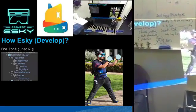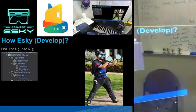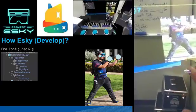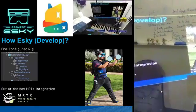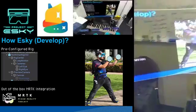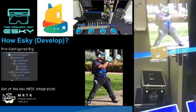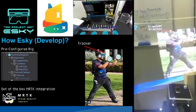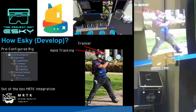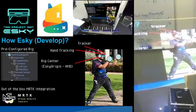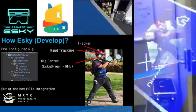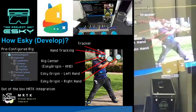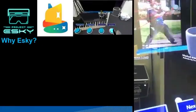Moving to phase two - development with Esky. Esky does all the work for you in regards to making a mixed reality experience. It comes with pre-configured rigs which enable you to quickly drag and drop content into the scene. It has an out-of-the-box Mixed Reality Toolkit integration - the scripts are automatically configured to highlight the tracker, the hand tracking, and the rig center, which we mark as our Esky origin for the head-mounted display.